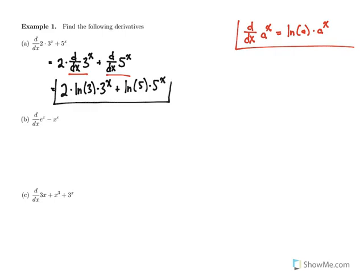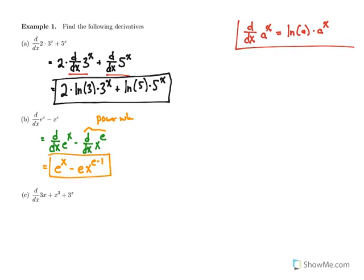Next example, the derivative of e^x minus x^e. These are two completely different derivative rules. The first one is our new derivative rule that the derivative of e^x is just e^x. And the other one is using the power rule - this isn't an exponential function, it is a power function. We're going to bring the power down out in front and decrease the power by one. So it's important to recognize what is an exponential function and what is a power function.